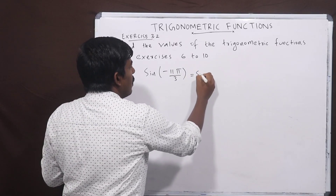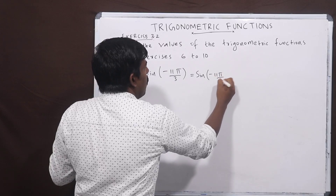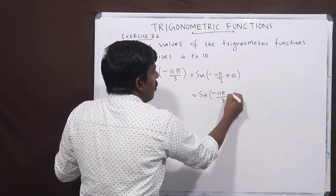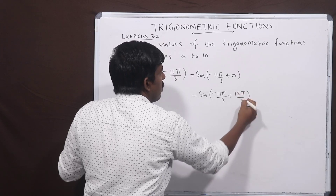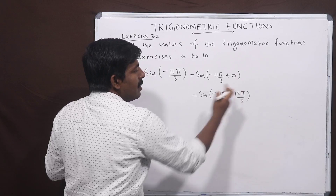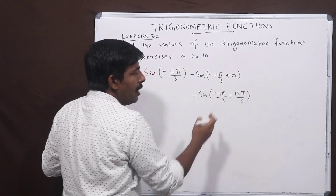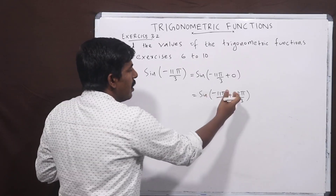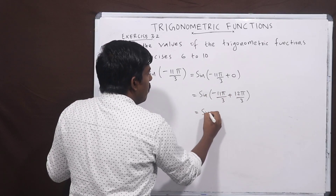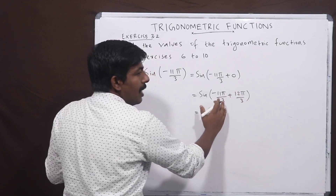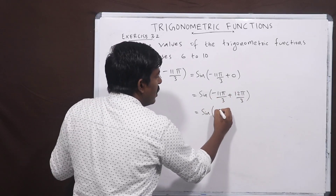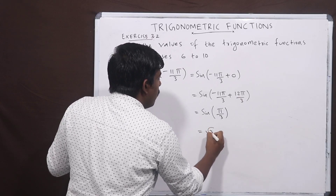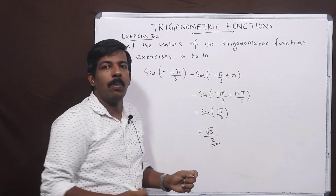For sin of minus 11π by 3, we add a multiple of 2π to make the angle positive. Adding 12π by 3 gives sin of 12π by 3 minus 11π by 3, which equals sin of π by 3. Sin of π by 3 equals sin 60 degrees, which equals root 3 by 2. This is the answer.